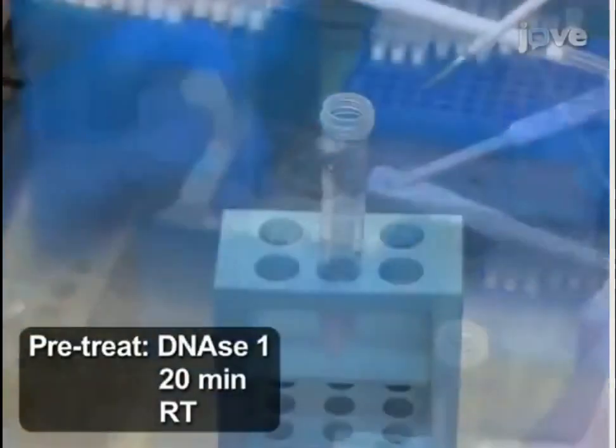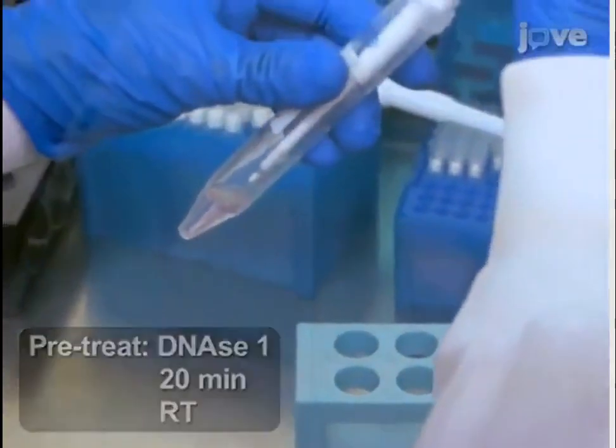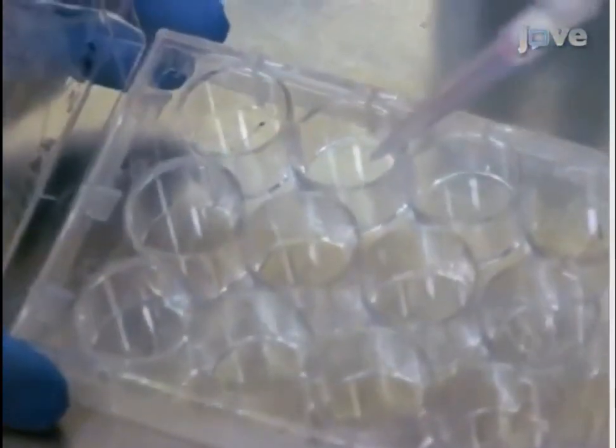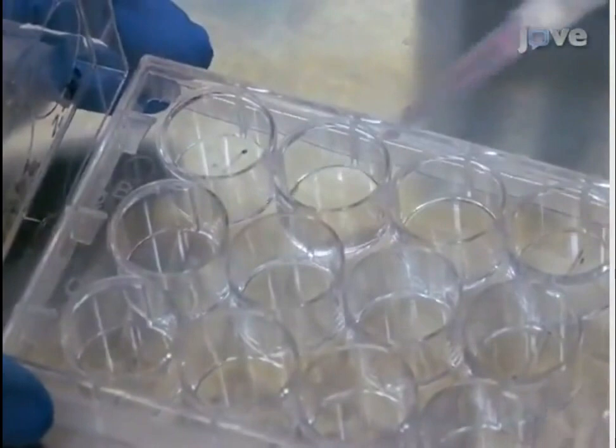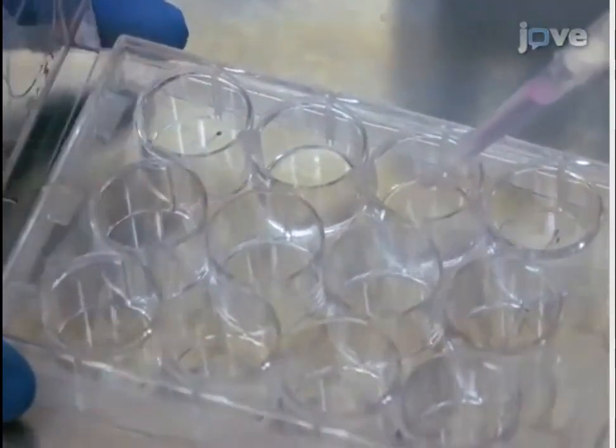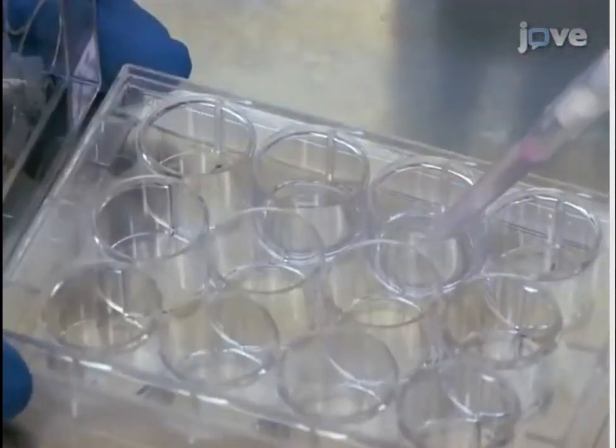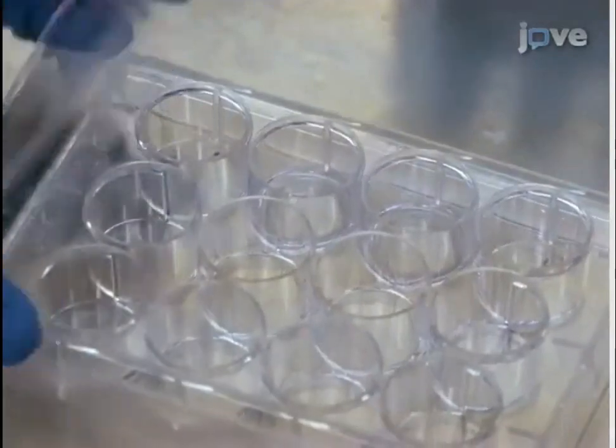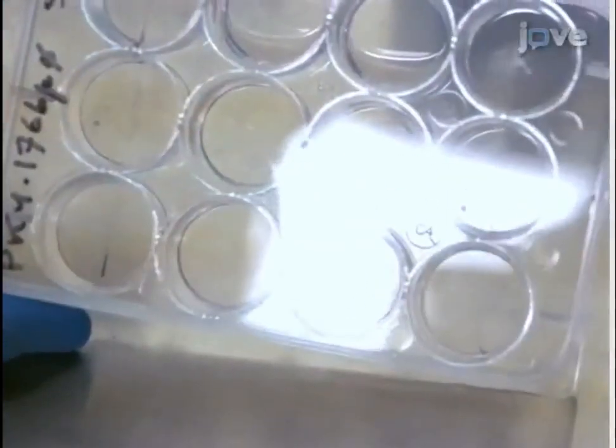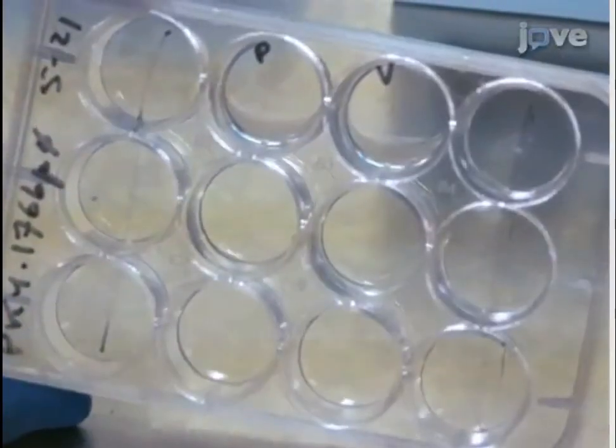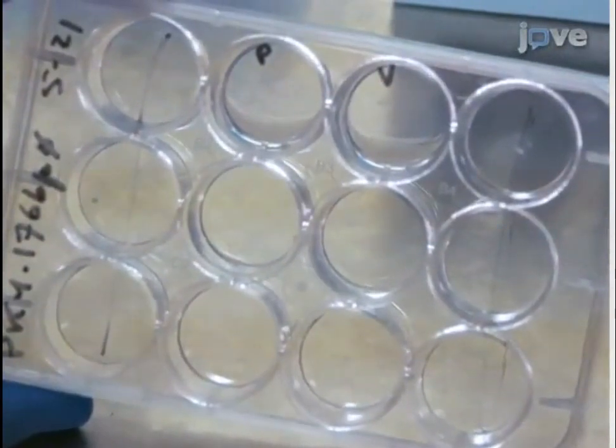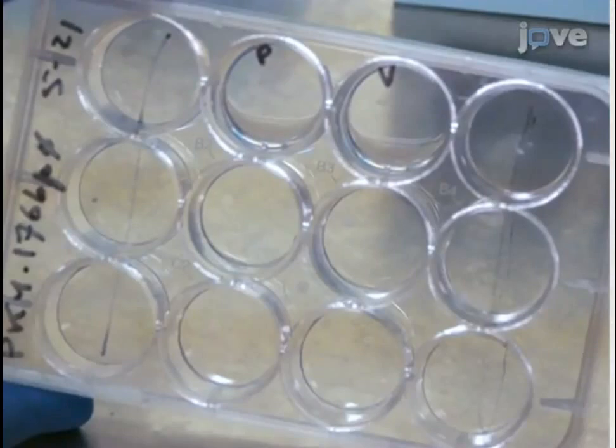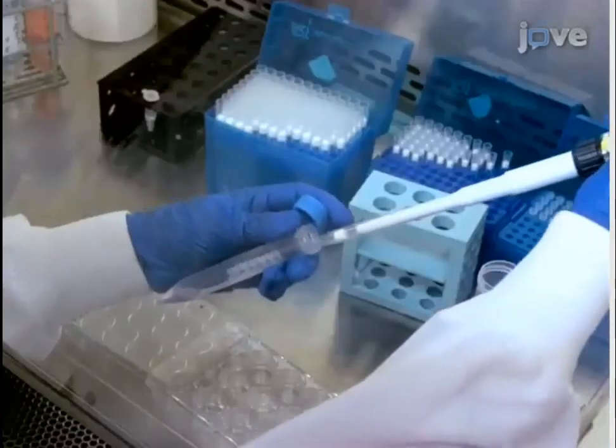The nasal epithelial cells obtained by nasal scrape biopsy are subsequently seeded in a PureCol coated 12-well plate. To begin this procedure, add a minimum volume of bronchial epithelial cell growth medium or BEGM++, about 80 to 100 microliters per well, into one to four wells of the coated plate depending on biopsy size. Next, use a p1000 pipette to carefully remove the pellet of the biopsy tissue from the tube without aspirating too much media.